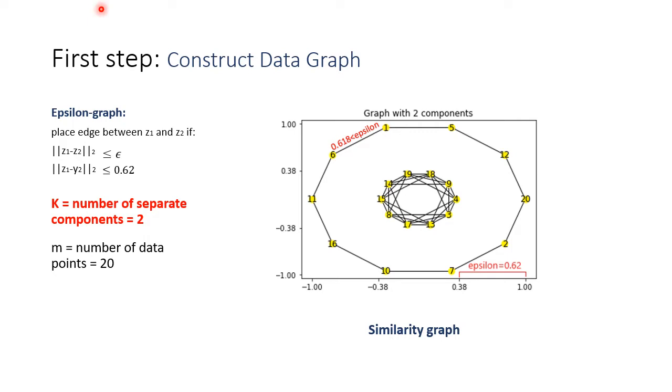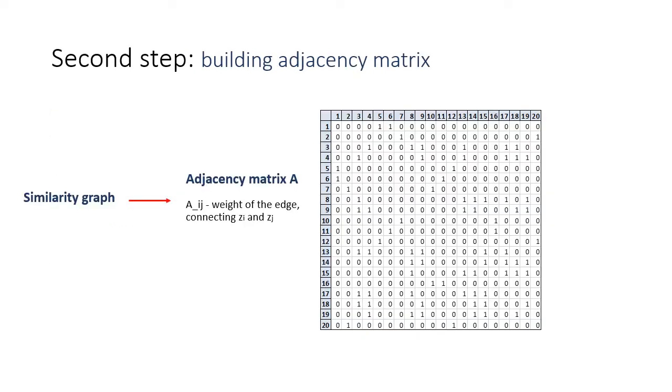Spectral clustering methods use numerical linear algebra to determine the clusters by working with connected components of the graph. Secondly, adjacency matrix is built from the similarity graph. It is a square matrix with number of rows and columns equal to amount of data points. In our case, the matrix size is 20 by 20.